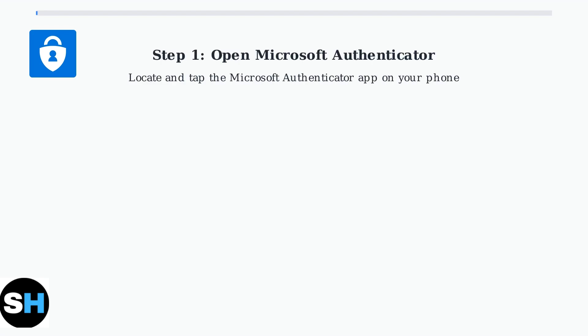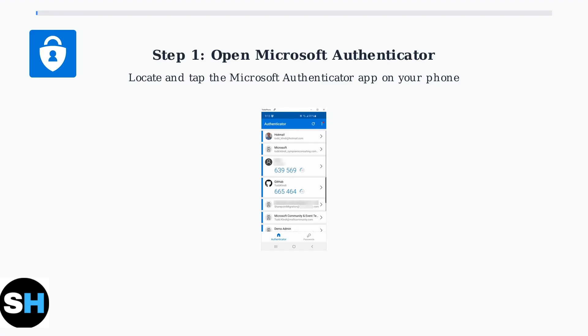Step one: open the Microsoft Authenticator app on your phone. You'll see a clean interface showing all your connected accounts.